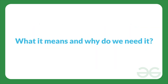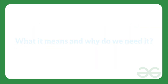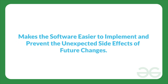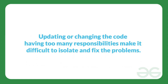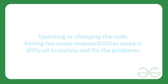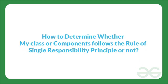What exactly does it mean and why do we need it? In simple terms, it makes your software easier to implement and prevents unexpected side effects of future changes. Imagine you have a class or a component which does several things in your program. When you have to update or change the code, too many responsibilities will make it more difficult to isolate and fix the problem. The more responsibilities your class has, the more often you need to change it.